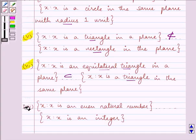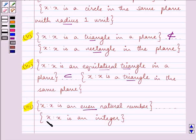Last thing to be answered here is X such that X is an even natural number, X such that X is an integer. Integers consist of all the even and odd natural numbers, right? So we will say that this is a subset. In this question, you must know what these symbols mean, and you can easily write down the answers.